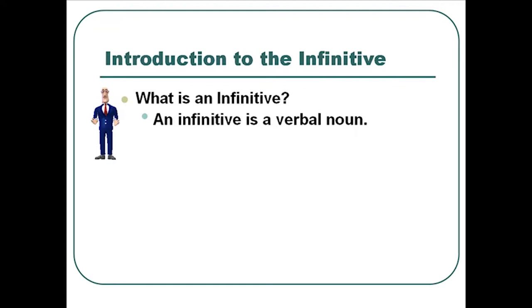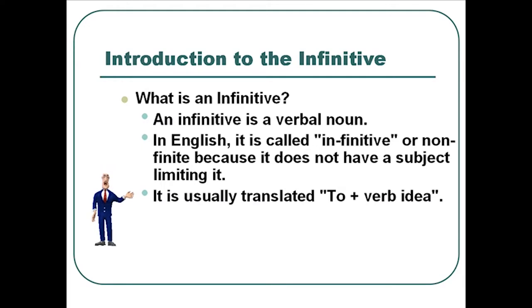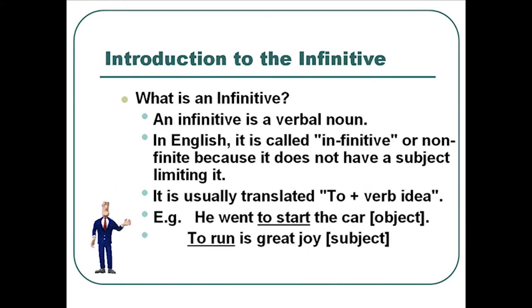An infinitive is a verbal noun. In English, it's called an infinitive because it's non-finite — it's not limited by the subject of the sentence. Infinitives in English won't take a subject. It's usually translated as 'to' plus the verb. For example: 'He went to start the car.' To start the car is used as the object of the sentence — a noun substitute that plays an object role.